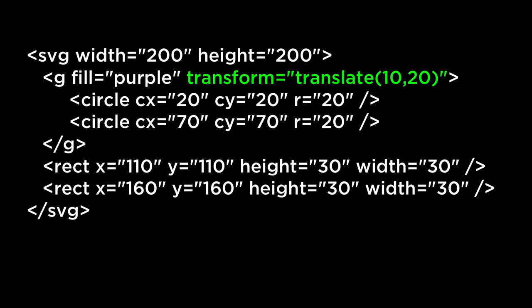You can do transformations like moving the group of elements up, down, left, right, or a combination. You can skew elements along the x-axis or y-axis, scale them up or down, rotate them, or do a combination of some or all of these. The most common and basic transformation is the translate, which moves all elements inside the G element a certain number of units of x and y.